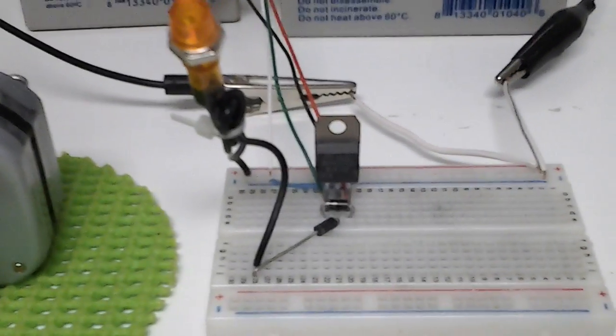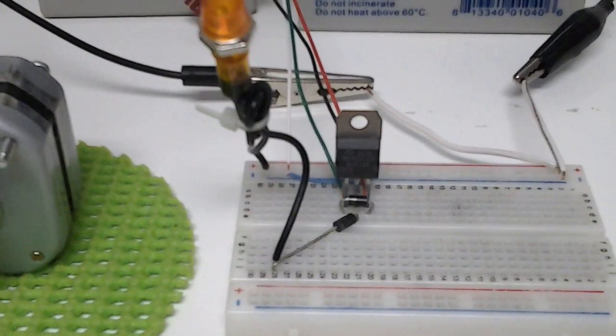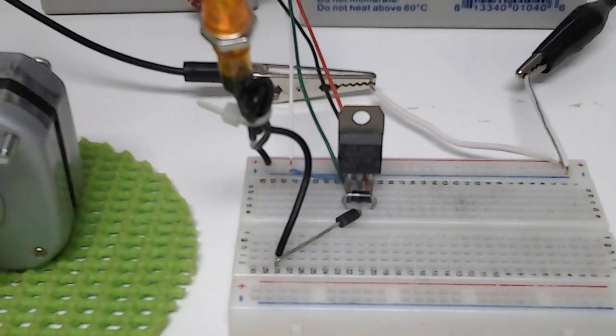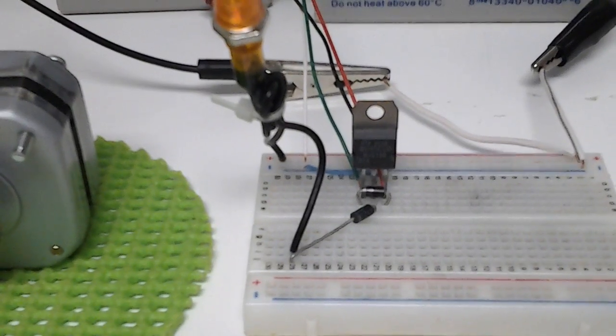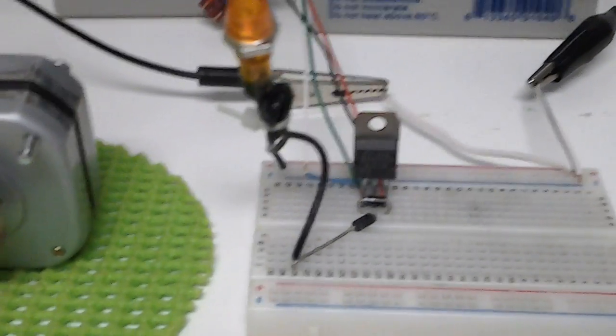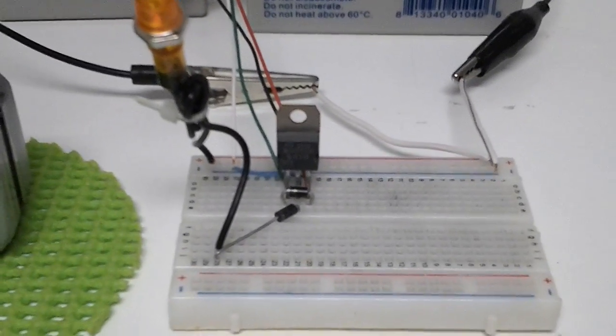I'm using an MJE 13007 transistor, two diodes that are 1N4007, a neon light on there, and that's it. Right now I'm running from a six-volt power supply.